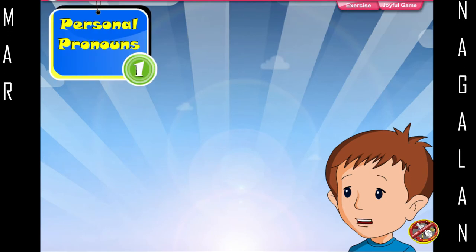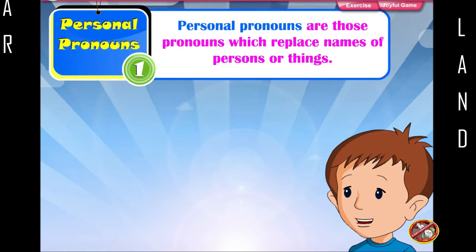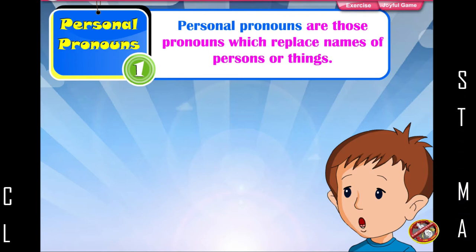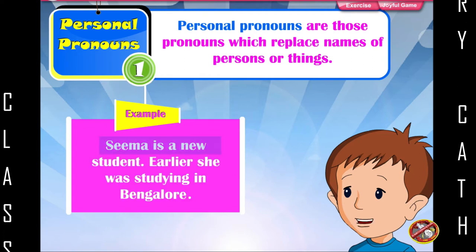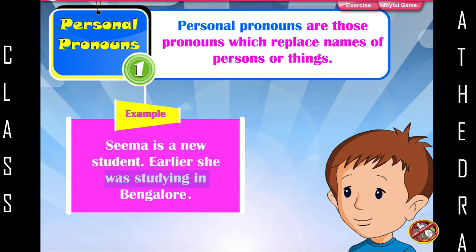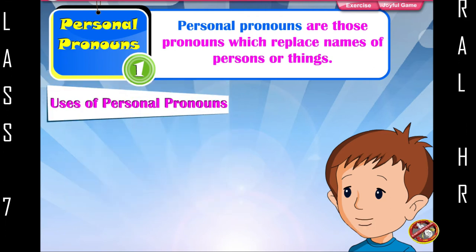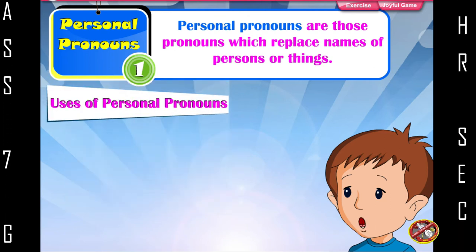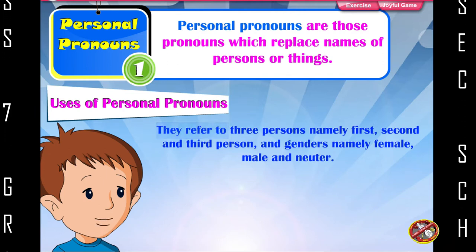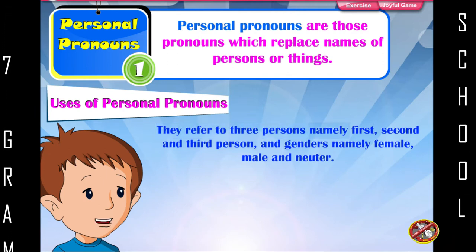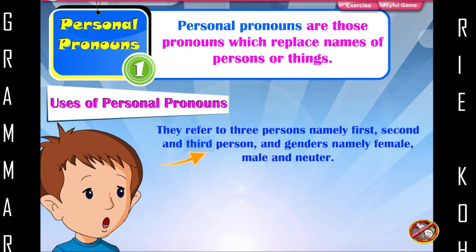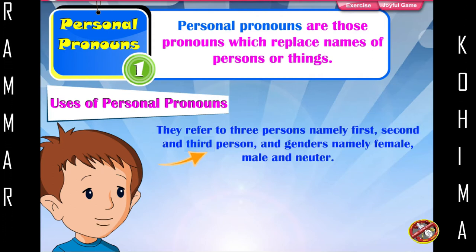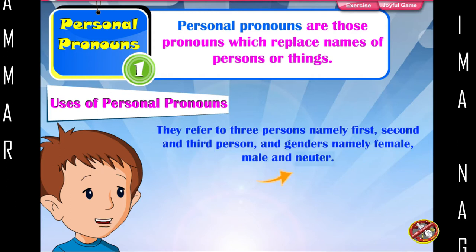Personal pronouns are those pronouns which replace names of persons or things. Example: Seema is a new student. Earlier she was studying in Bangalore. Uses of personal pronouns: they refer to three persons — first, second and third person — and genders, namely female, male and neuter.